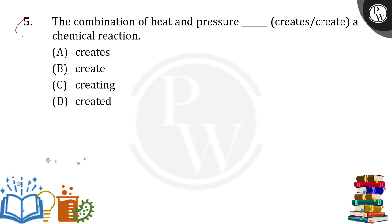Your fifth question is the combination of heat and pressure — a chemical reaction. What is the combination word? Combination means — there are two things in combination, but 'combination' itself is singular.